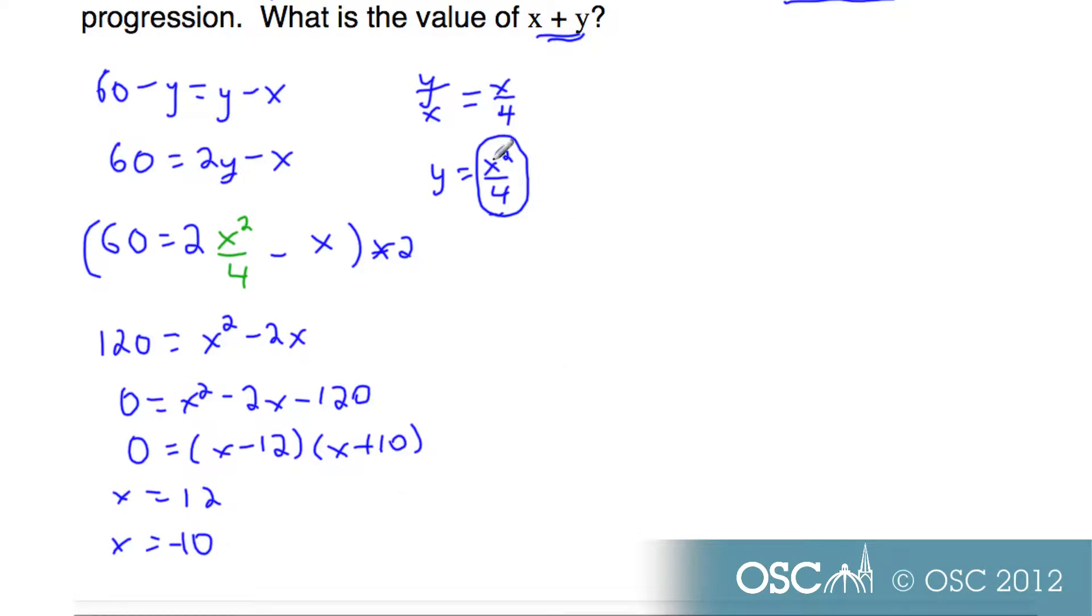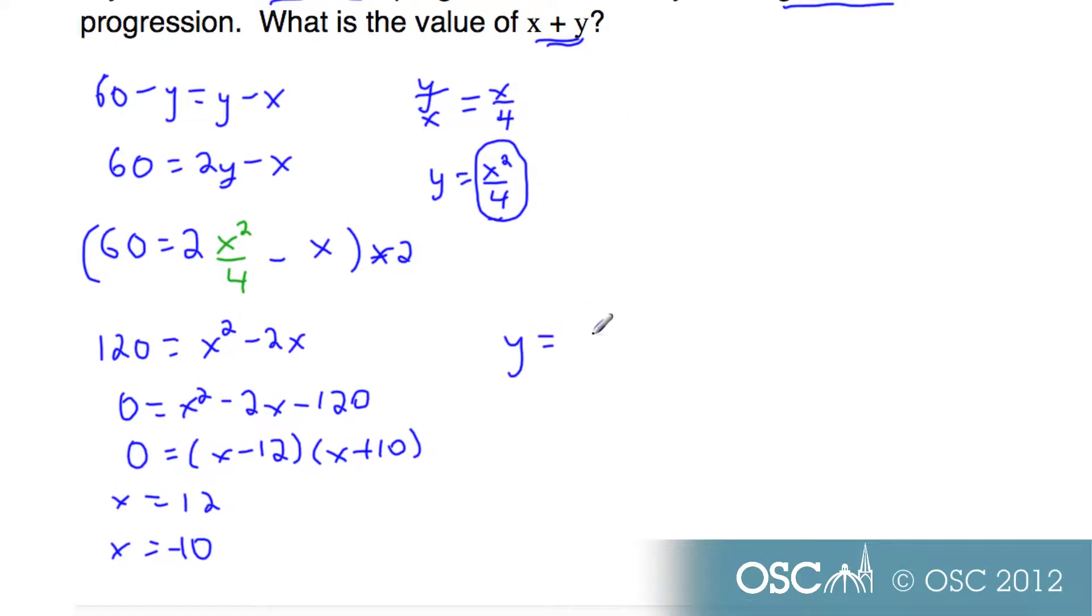Once you have those, we can easily find y. So, y1 equals 12 squared over 4, which is 36. And for the other value, y2 equals negative 10 squared over 4, which is 25.